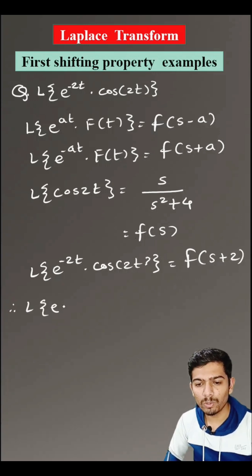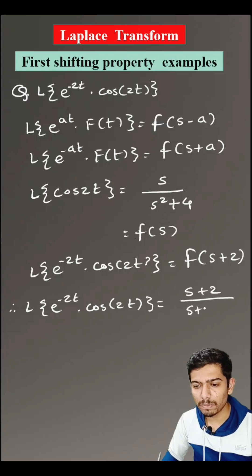Therefore, Laplace transform of e to the power minus 2t into cos of 2t is equals to s plus 2 divided by s plus 2 bracket square plus 4. So this is the answer.